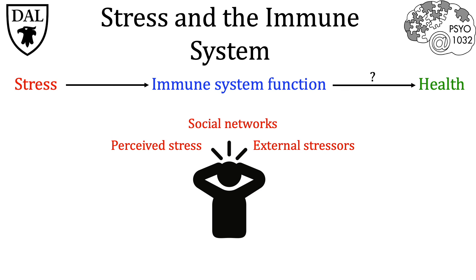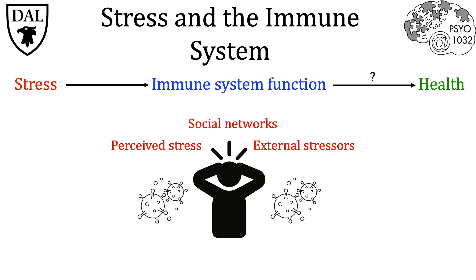In the second study, researchers took a group of individuals and assessed them on three aspects of their lives: their self-reported amount of perceived stress, the social networks they had available to them, and the amount of external stressors as determined by the researchers. They then exposed these individuals to the common cold and determined their susceptibility to it. In conclusion, they determined that the most prominent predictor of whether or not an individual got sick was their perceived level of stress — telling us that it's the individual's own subjective experience of stress that determines its effects on the immune system and thus their health.